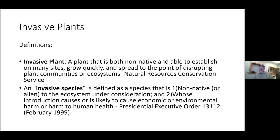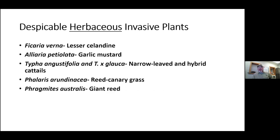That brings me to rare plants. When I think about things being in peril or maybe being lost in the natural world, I think of a quote from one of my favorites, Aldo Leopold: 'To keep every cog and wheel is the first precaution to intelligent tinkering.' Every piece of a given ecosystem is important, even if we don't really know why yet.